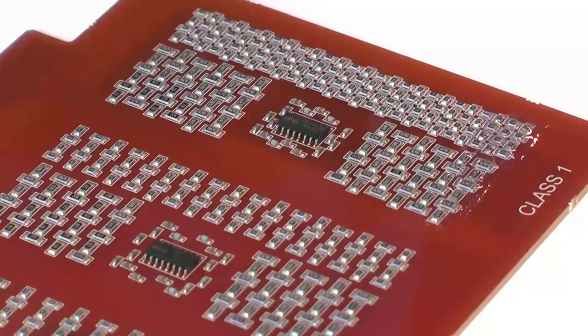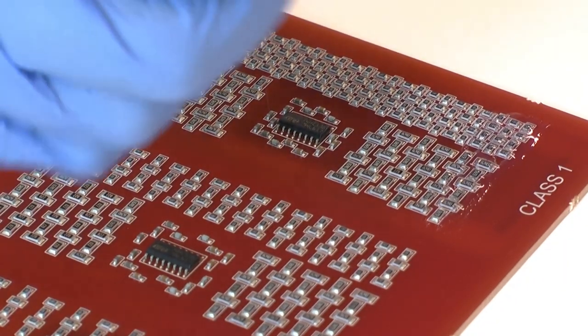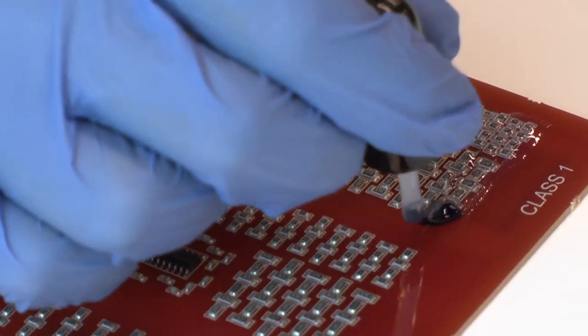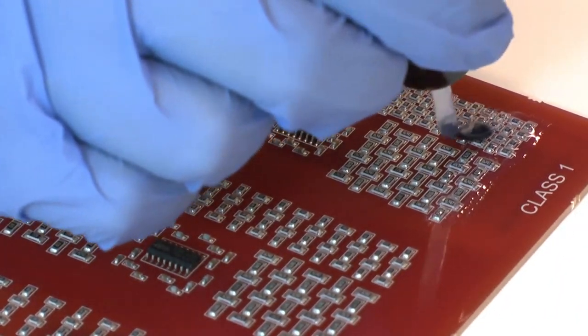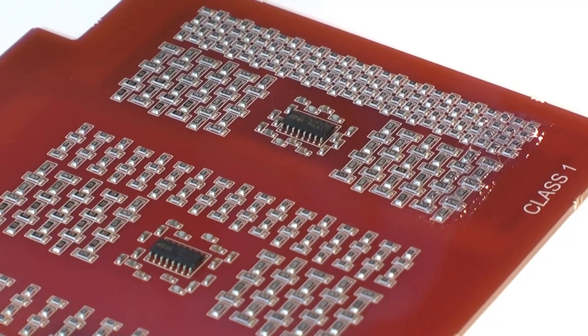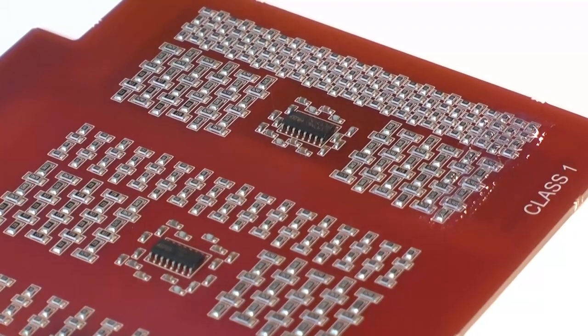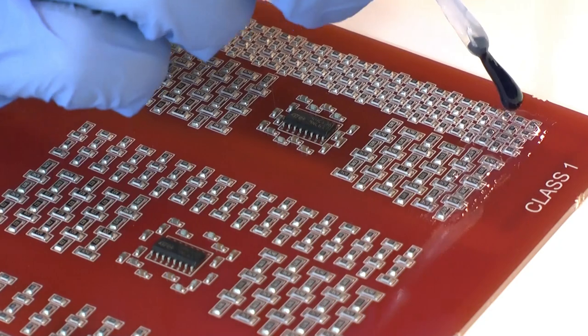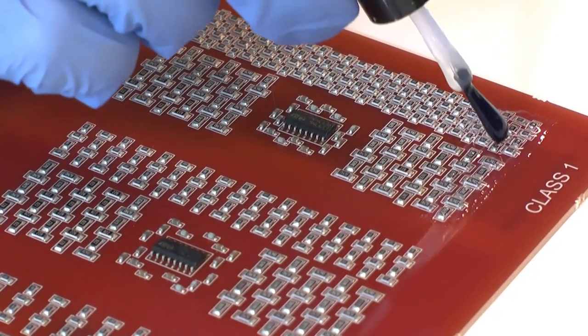Brush coating: As a general rule, Electrolube advises against using the brush coating method, as even with a skilled technician, there is a high potential to over-apply the coating. This being said, it can be a useful technique for repairing or touching up boards.